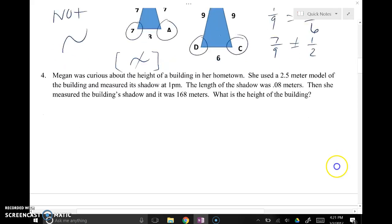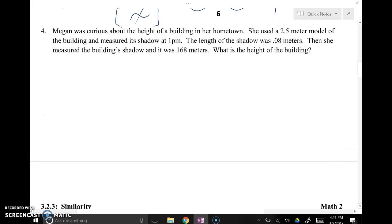Okay, let's do a word problem. Megan was curious about the height of a building in her hometown. She used a 2.5 meter model of the building and measured its shadow at 1 p.m. The length of the shadow was 0.8 meters. Then she measured the building's shadow, the real building's shadow, and it was 168 meters. What is the height of the building?